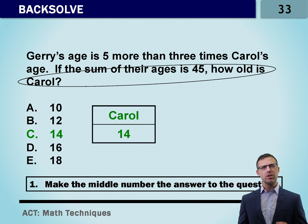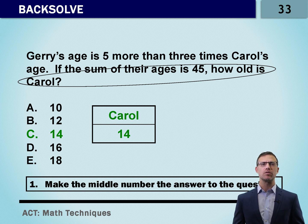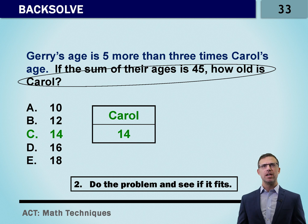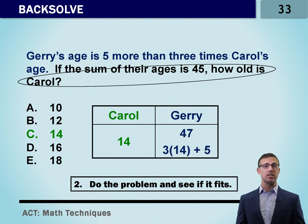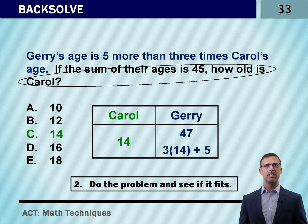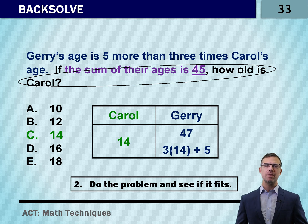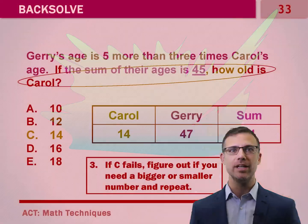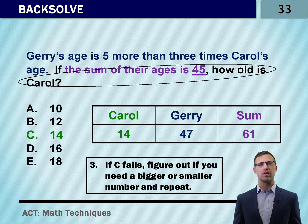Let's start with C. We start with the middle number because if that number isn't correct, we know to make that number smaller or larger based on the result. If we say Carol is 14, let's figure out how old Jerry is. Jerry is supposed to be five more than three times Carol. Three times 14 is 42, plus five is 47. Now we know Carol and we know Jerry. Does this work for our question? They said the sum of the ages is 45. Is 14 plus 47 going to equal 45? No! It is way too high — one of the numbers is already bigger than 45. We put them together, our sum is 61.